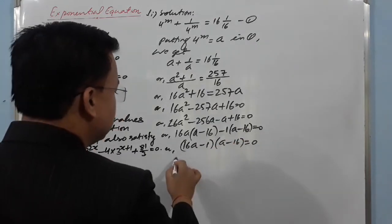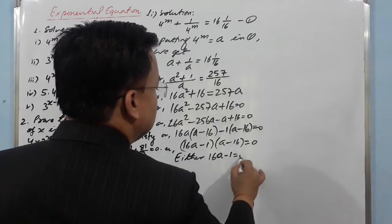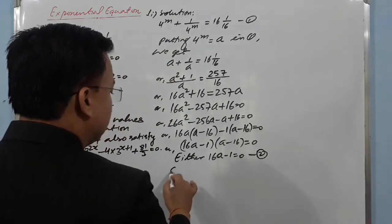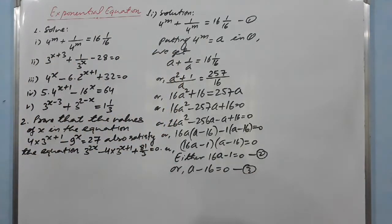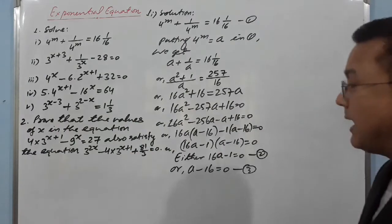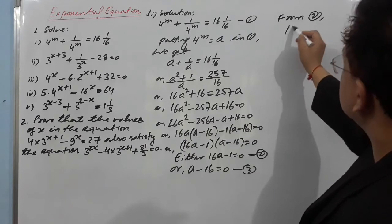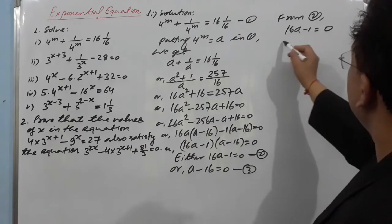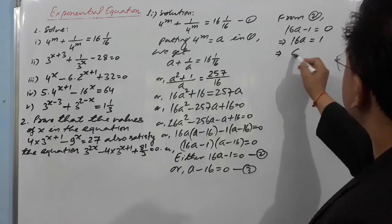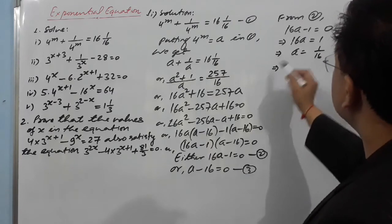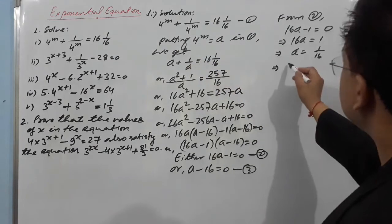So either (16a - 1) = 0 or (a - 16) = 0. From the first case: 16a - 1 = 0, which gives 16a = 1, so a = 1/16. Now replacing 'a': since 4^m = a, we have 4^m = 1/16.